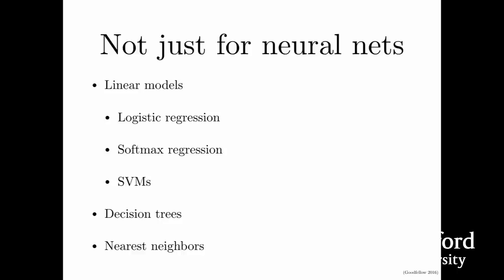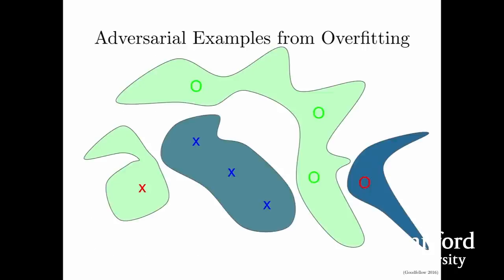Besides linear models, we've also seen that we can fool many different kinds of models, including logistic regression, SVMs, decision trees, and to a lesser extent, nearest neighbors classifiers.